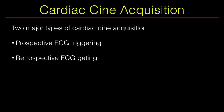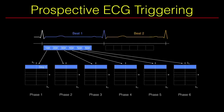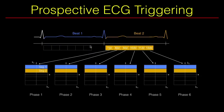We acquire cardiac cine images with either prospective ECG triggering or retrospective ECG gating. In prospective ECG triggering, as soon as we detect the QRS complex we acquire the first segment for all the cardiac phases. The acquisition duration is constant and defined to be less than the lowest RR interval. Once we see the next trigger pulse we acquire the second segment and fill it into k-space. The reconstruction is very simple — we combine the different segments, Fourier transform, and get the final cardiac cine images.